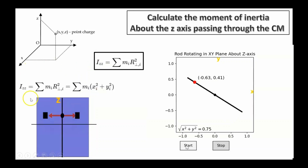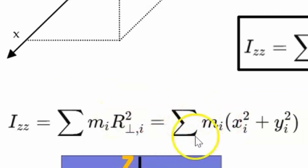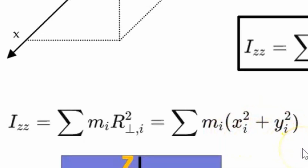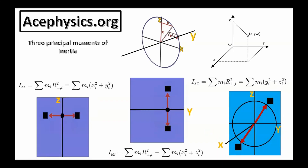Therefore, the moment of inertia about the z-axis, defined as the sum of m times r-perpendicular squared, equals the sum of m times (x² + y²), because x² + y² is the perpendicular distance squared. The moment of inertia depends on the axis of rotation. Here we show all three principal moments: Ixx, Iyy, and Izz. Each is calculated by summing the mass of each element times the square of the perpendicular distance from the axis of rotation, capturing how spread out the mass is relative to the chosen axis.